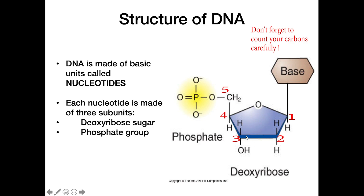The second subunit is our phosphate group, found out here. We know it's a phosphate because it has a phosphate in the middle, but something important about this group is its negative charge. This negative charge is what makes DNA an overall negatively charged molecule, which is important when we get into lab techniques like gel electrophoresis and other things like that.